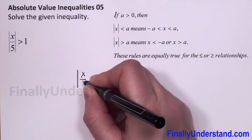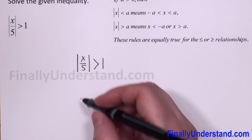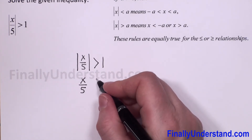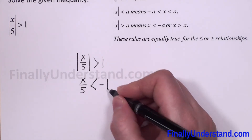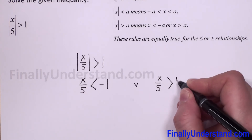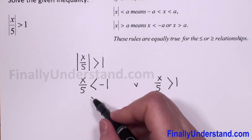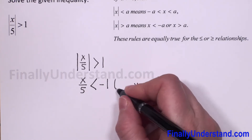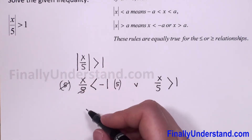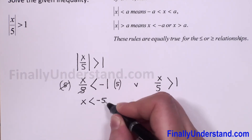Absolute value of x over 5 is greater than 1. So we will have x over 5 is less than negative 1, or x over 5 is greater than 1. Now we have to solve these two inequalities. I will multiply both sides by 5. 5 and 5 will cancel and we have x is less than negative 5.